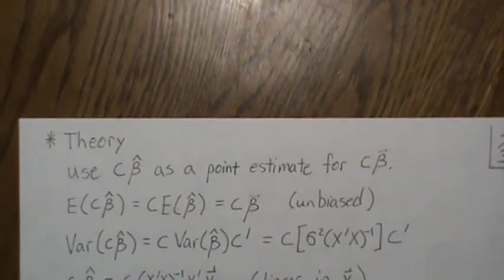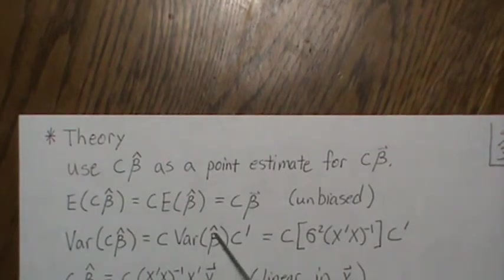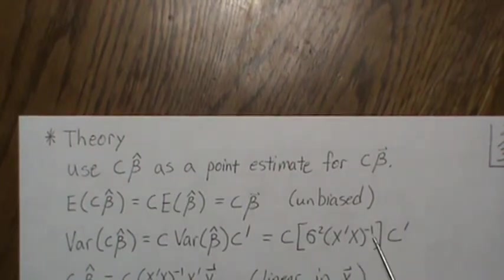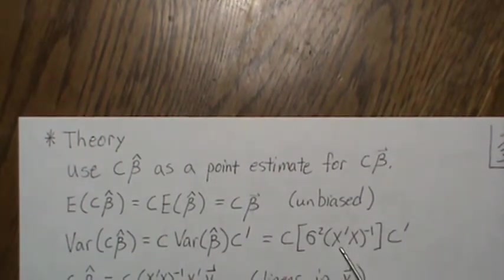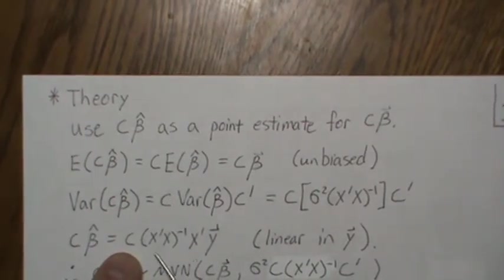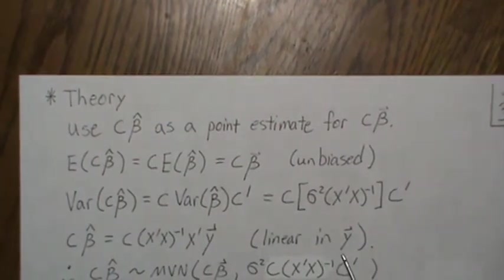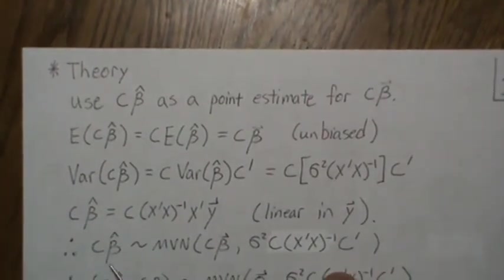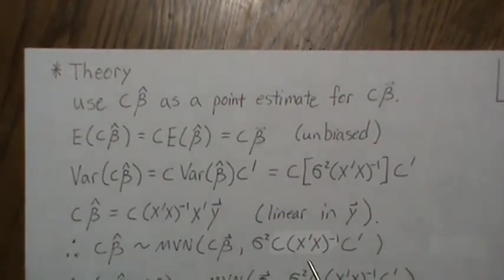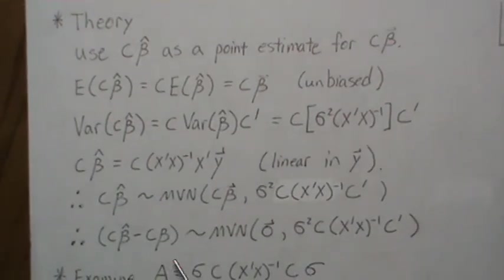Now let's look at the variance of C*beta_hat. The variance operator brings C out front and C-transpose out back, giving C * Var(beta_hat) * C-transpose. The variance of beta_hat is sigma-squared * (X-transpose X)^{-1}, as derived previously. Since beta_hat is linear in Y, C*beta_hat is multivariate normal with mean C*beta and this variance-covariance structure.